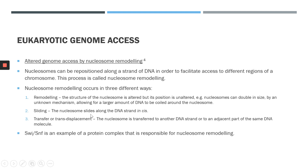Nucleosomes can also slide along a DNA strand in cis — meaning along the same strand of DNA. The nucleosome can shift to the left or to the right along the same strand, facilitating access to different parts of the DNA strand at different points in time. In addition to sliding, nucleosomes can also transfer — called trans-displacement — where the nucleosome transfers to another strand of DNA or to an adjacent part of the same strand, or even to a different chromosome completely.